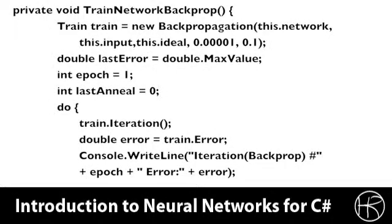Now let's see how the hybrid training was actually implemented. Here you see the train backpropagation function that is called. This function begins a normal back propagation training loop. We set the last error so that we can register how much error has improved, and we set the epoch number to 1. The last time that we've annealed is 0 because we've never annealed before. We want to keep track of how recently we've annealed because we don't want to continually invoke it. We then enter the do loop and begin iterating over the back propagation algorithm.